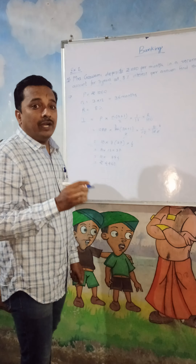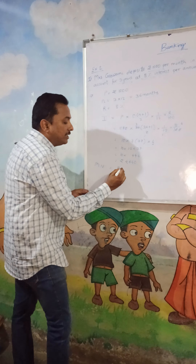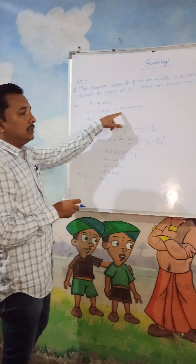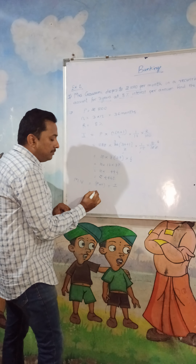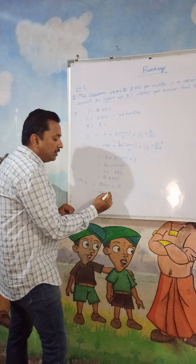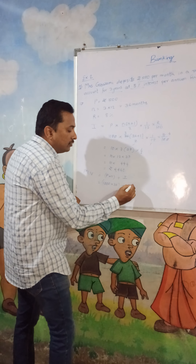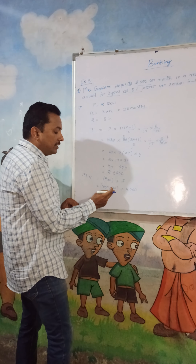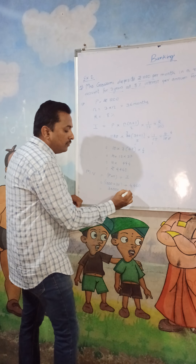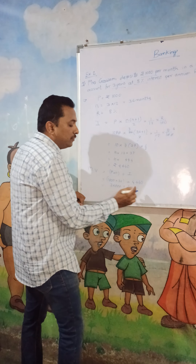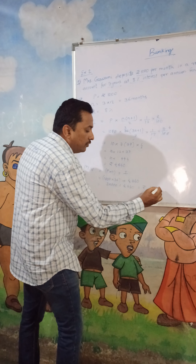Now we have to find the maturity value. The formula is: Maturity Value = P × n + Interest. Mrs. Goswami deposited 1000 for 36 months, so P × n = 36 × 1000 = 36,000. Adding the interest: 36,000 + 4440 = 40,440. So the maturity value is rupees 40,440.